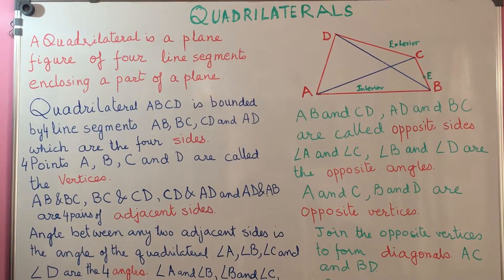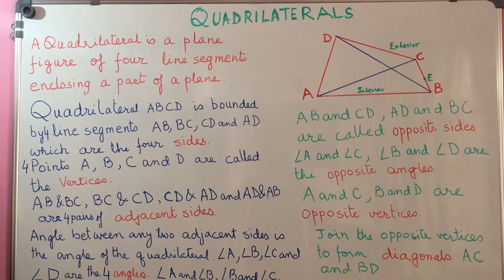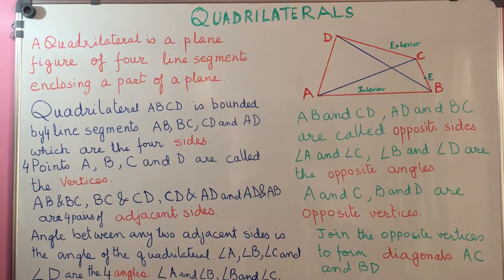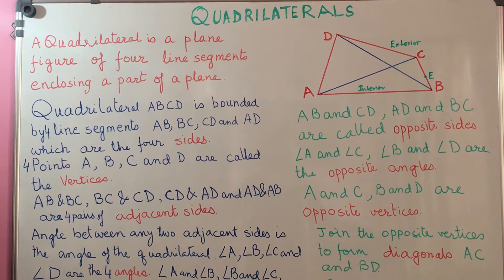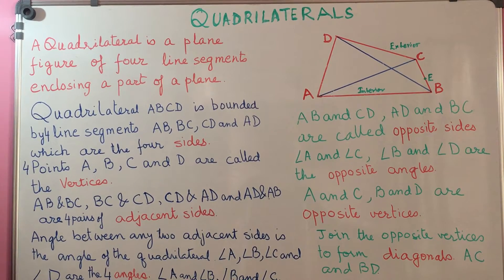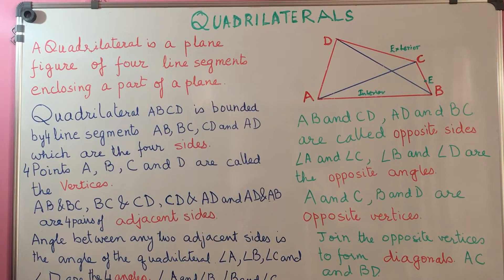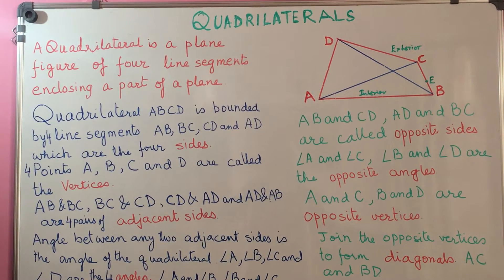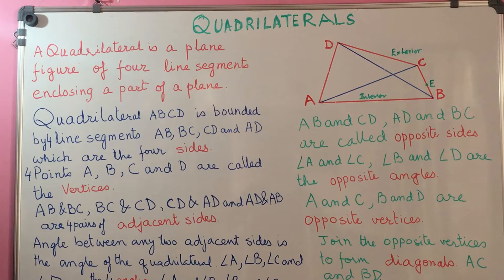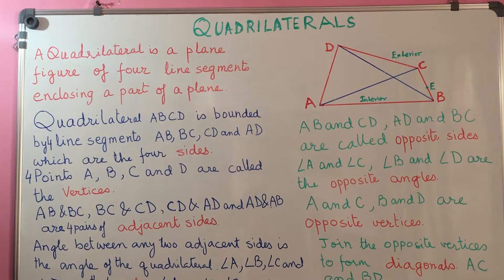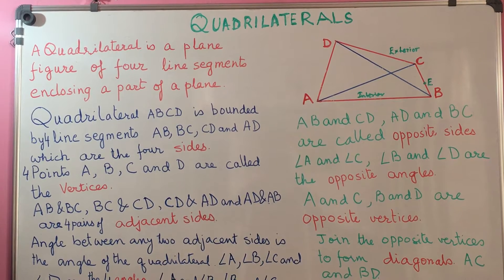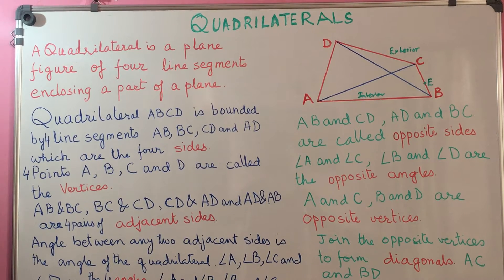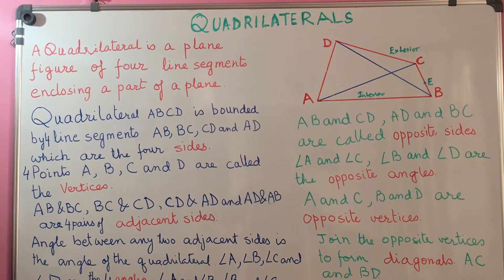Sides BC and CD intersect at C, so C is another vertex. And sides CD and AD intersect at D, so D is another vertex. So a quadrilateral is enclosed by four line segments AB, BC, CD, and AD, and it has four vertices A, B, C, and D.